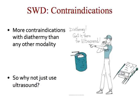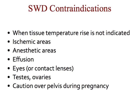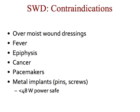Contraindications: we have more contraindications with diathermy than probably any other modality. Why wouldn't we just use ultrasound? We're looking at treating larger areas. Contraindications include when tissue temperature rise is not indicated such as an acute injury, ischemic areas, anesthetic areas where they don't have normal sensation, effusion, eyes, testes and ovaries, caution over the pelvis during pregnancy, and over moist wound dressings, which can preferentially heat the tissue or the bandaging.